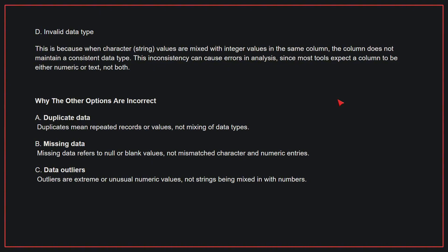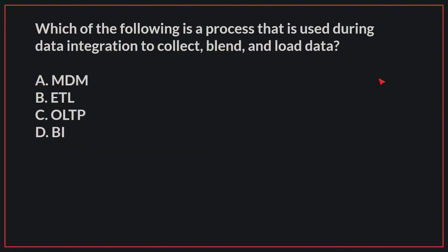Why the other options are incorrect? A: Duplicate data. Duplicates mean repeated records or values, not mixing of data types. B: Missing data. Missing data refers to null or blank values, not mismatched character and numeric entries. C: Data outliers. Outliers are extreme or unusual numeric values, not strings being mixed in with numbers. Therefore, the correct answer is D.